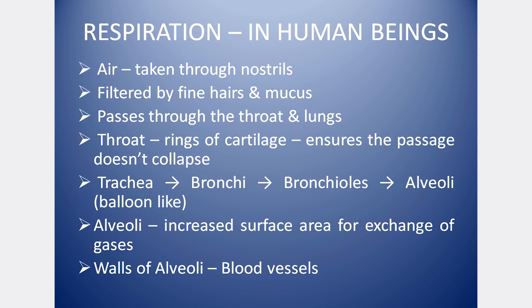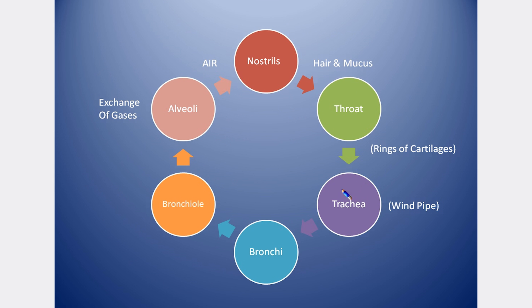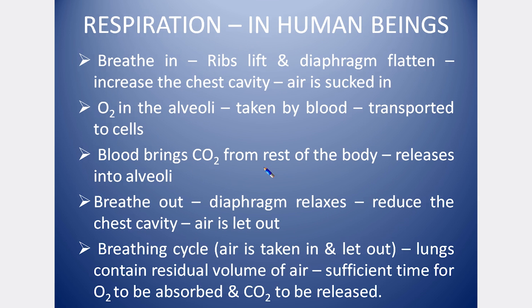The large surface area of the alveoli makes the exchange of gases easier. You can use a mind map: nostrils filter air with hair and mucus, then the throat has rings of cartilage, then the trachea or windpipe, then bronchioles, and finally alveoli which have a balloon-like structure for the exchange of gases.